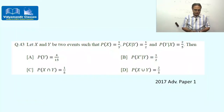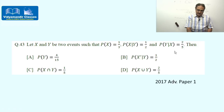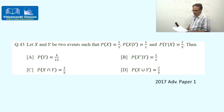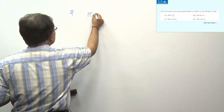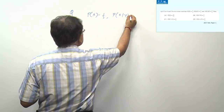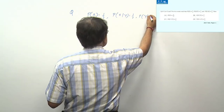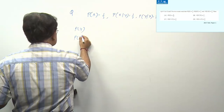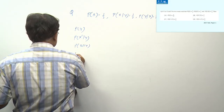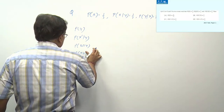The next question: let X and Y be two events such that P(X) = 1/3, P(X|Y) = 1/2, and P(Y|X) = 2/5. We need to find: probability of Y, probability of Xᶜ given Y, probability of X ∩ Y, and probability of X ∪ Y.